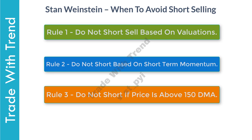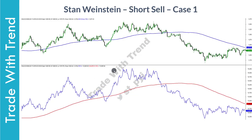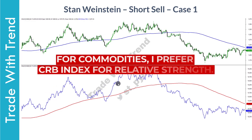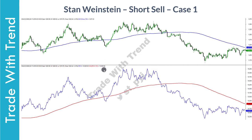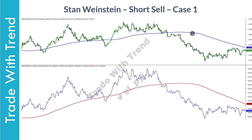Let us now look at three case studies to understand this short selling strategy better. The first is gold. I have not taken gold futures data, so I don't have access to volume data. Back in 2018, gold was moving higher and outperforming the commodities index. I have taken the Reuters CRB index to plot the RS indicator against gold. In May 2018, gold started transitioning from stage three to stage four — price moved below the range and below the 150-day moving average, and the RS indicator clearly moved lower. Gold back then was a clear case for short selling based on Stan Weinstein's method.